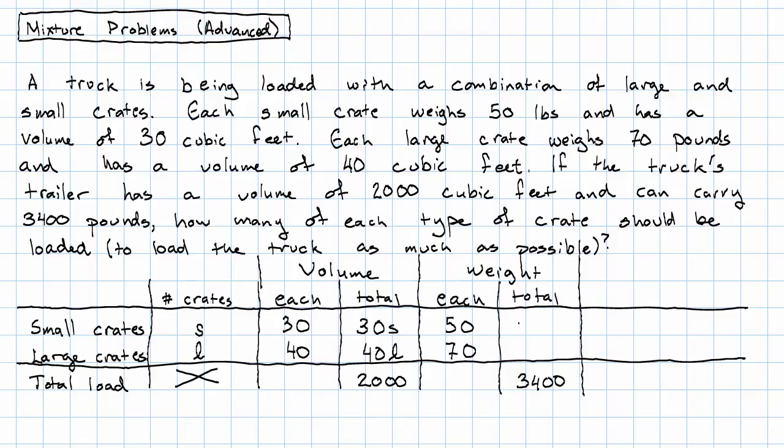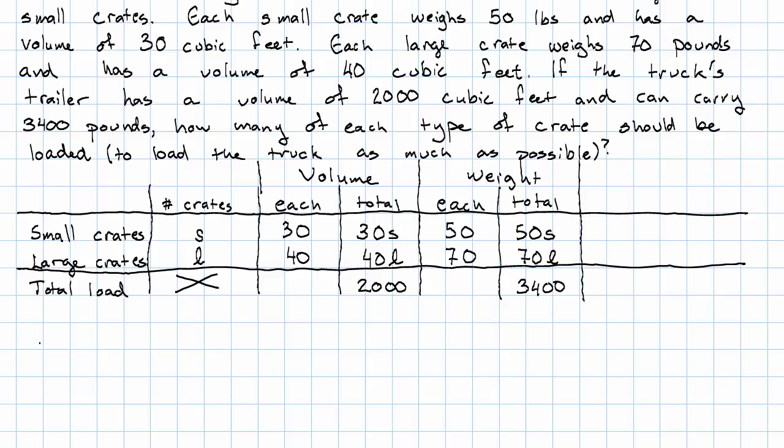If I have S small crates weighing 50 each, the total weight of my small crates will be 50S. If I have L large crates weighing 70 each, the total weight of my large crates will be 70L. Thus, we get two equations. One for volume: the volume of the small crates plus the volume of the large crates is the total volume of the load, and one for weight: the weight of the small crates plus the weight of the large crates is the total weight of the load.